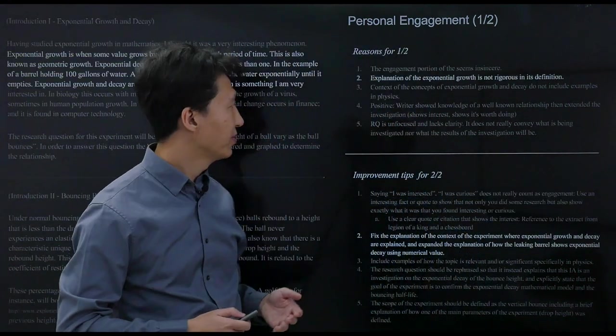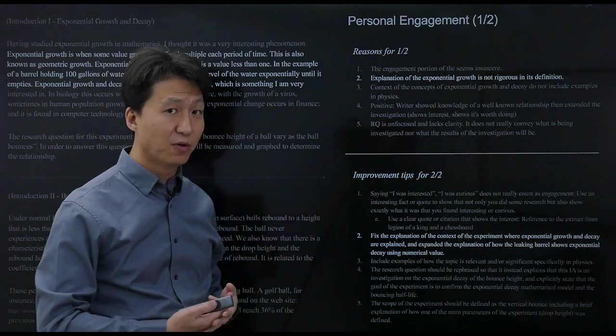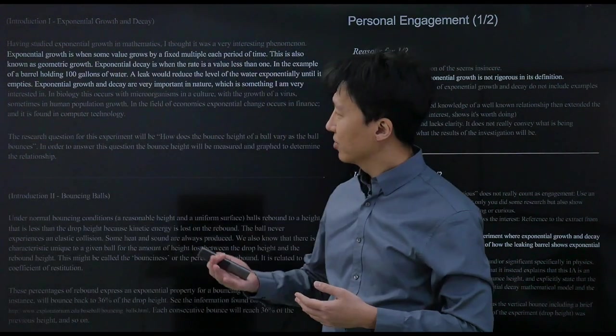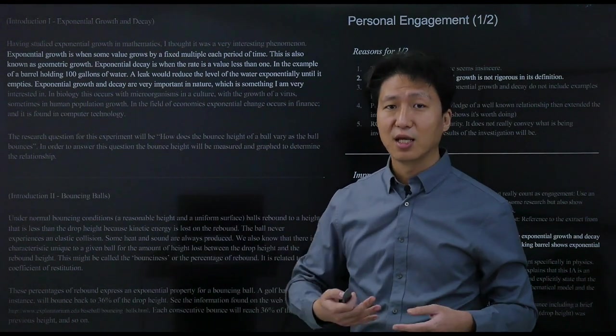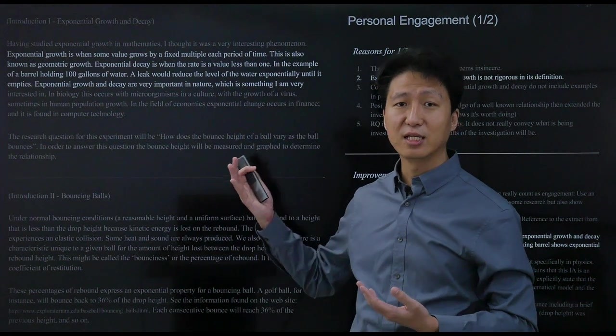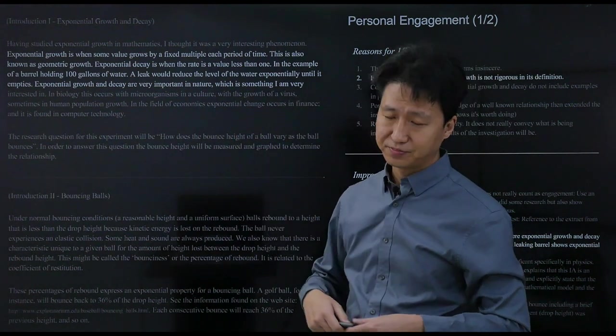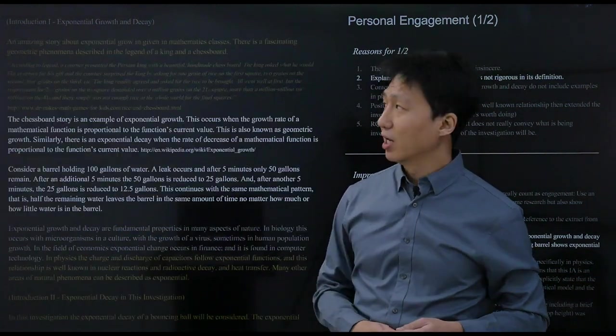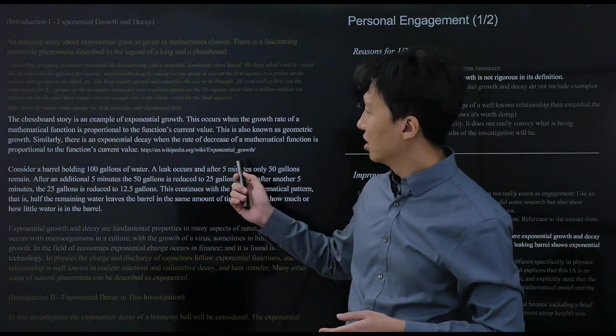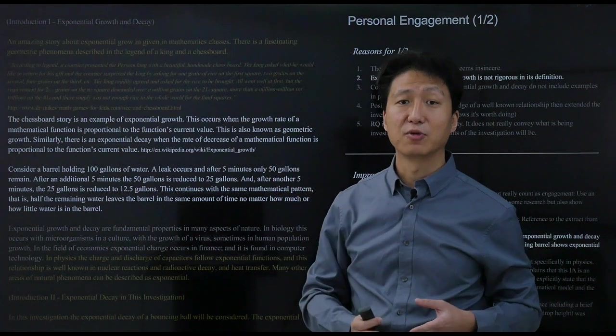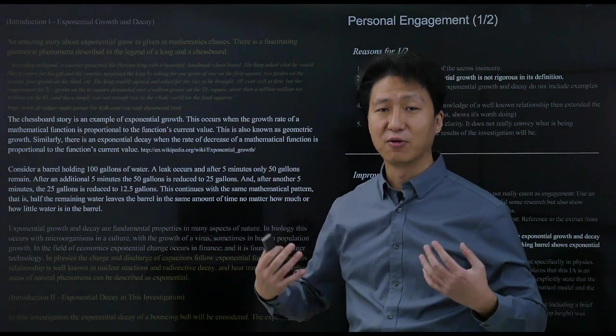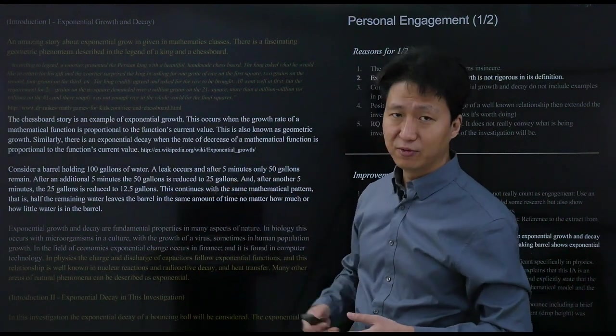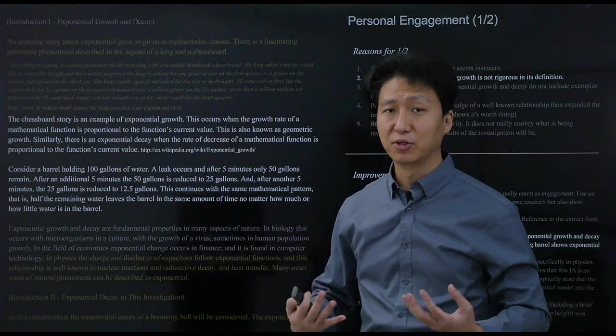The second thing we can go on about is the explanation on exponential growth was not as good as it should have been. Originally, there was a short explanation of what exponential growth is and a short example about a leaking water tank. We can do this better. You can see that this definition for exponential growth is a lot more rigorous, more like a dictionary, showing that you actually did the research. We put some numbers into the example to show that you know how it works and are able to do the calculations.